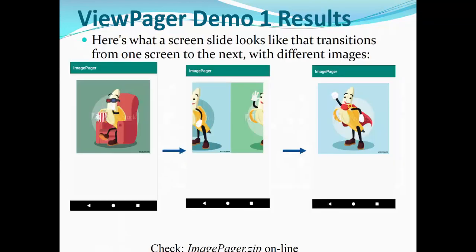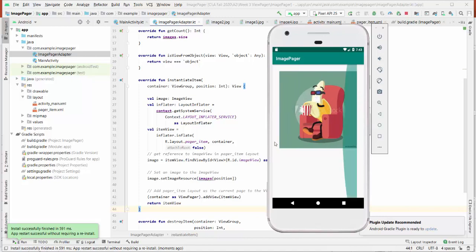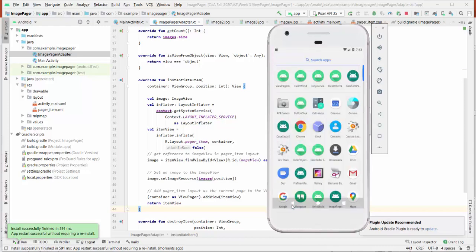So here's what a screen slide looks like, the transition from one screen to the next with different images. Please check ImagePager zip online. This is a simple slideshow of these four images, nothing special. As I said, we don't use Fragment in this case, we just simply switch the images. This is not a very flexible method to use ViewPager. This is just an example.